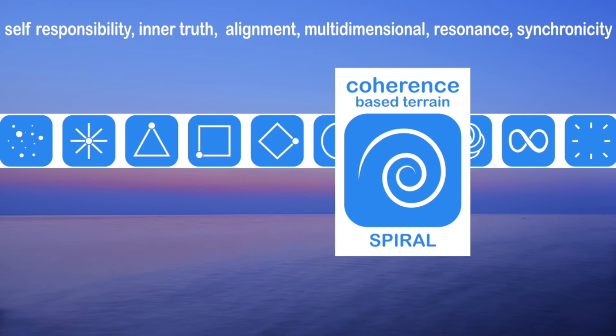the coherence-based terrain spiral, someone starts to have a multidimensional sense of self, and they're really embodying this understanding that they create their own reality from the inside out, and they're taking full responsibility for the reality that's created in their life.